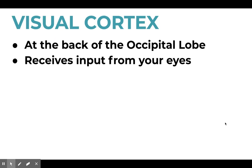Then we have the visual cortex, which makes sense. It's at the back of the occipital lobe and it receives input from our eyes. The occipital lobe deals with vision — that's where the visual cortex is. I always think of optometrist, ophthalmology — anytime you see that 'O,' it usually deals with your vision.